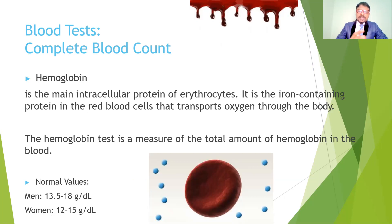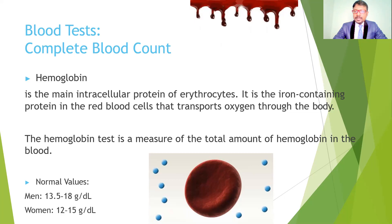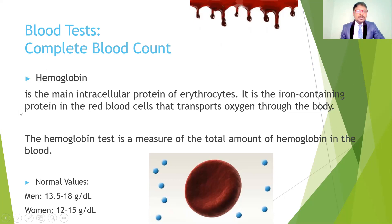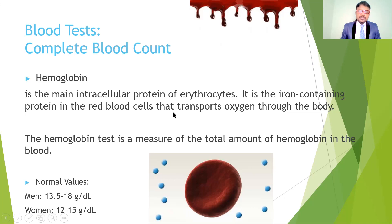Hemoglobin is the main intracellular protein of erythrocytes — heme and globin combined together form this erythrocyte protein, making up red blood cells. Any reduction in red blood cells may cause difficulty transporting oxygen, as oxygen transport is the main function of blood. Hemoglobin is an iron-containing protein in red blood cells that transports oxygen throughout the body. Defects in hemoglobin may lead to complications such as anemia, polycythemia, or leukemia. The hemoglobin test measures the total amount of hemoglobin in the blood.